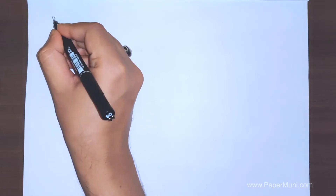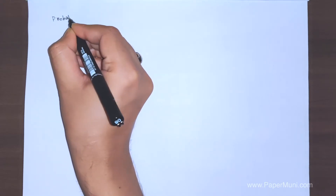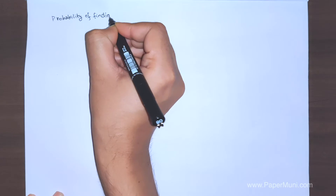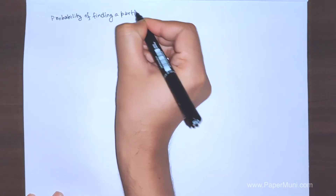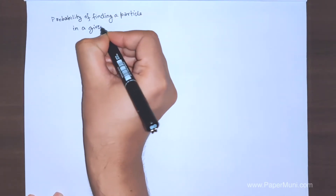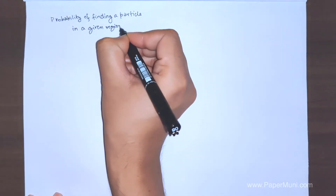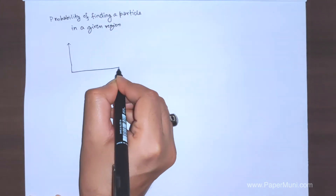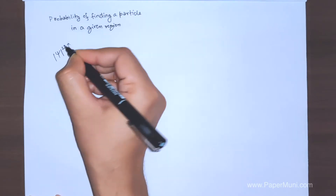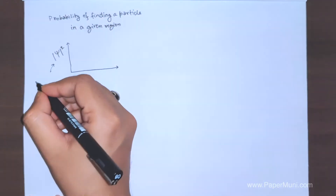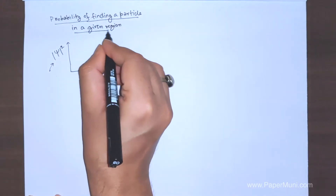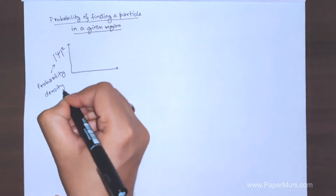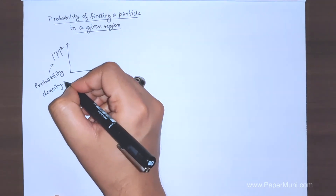So, the probability of finding a single particle in a given region — we'll discuss about a single particle only. If you have been given |ψ|², we have seen in continuous systems that |ψ|² serves as the distribution function, or in mathematical terms, the probability density — also called the probability distribution function.